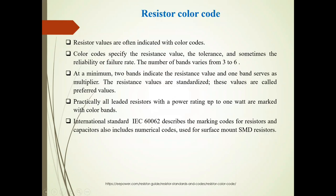Now friends, resistor color code. Resistor values are indicated by these color codes. The color codes are printed on the body of the resistor. The color code specifies resistance value, tolerance, and sometimes reliability or failure rate. Now number of bands varies from 3 to 6.